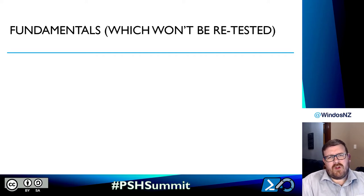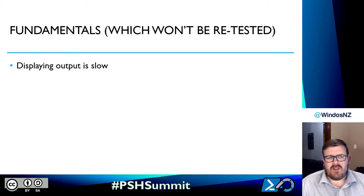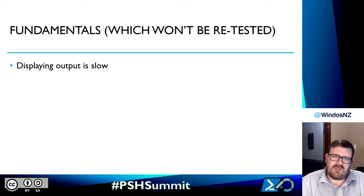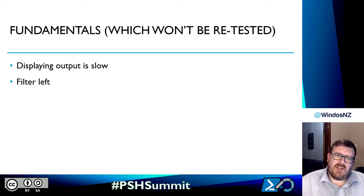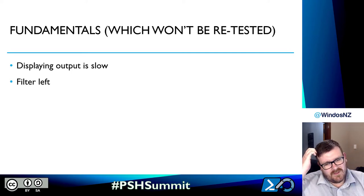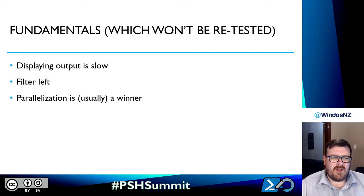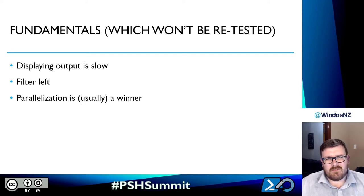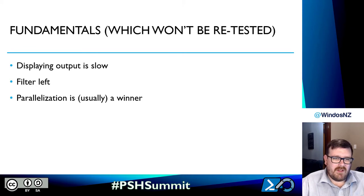Given we've already covered some of this stuff in the past, there are some fundamentals we're not going to retest. First of all, displaying output is slow — if you can avoid displaying stuff to screen, do that and your script will naturally run faster. There's the old adage 'filter left, format right,' which holds very true, mainly because you're doing the heavy lifting up front to weed out stuff you don't care about. And running in parallel is usually a winner, with the caveat that if your workload is so trivial it takes more time to spin up the parallel task runners than to actually run the code.